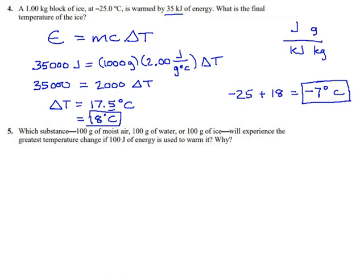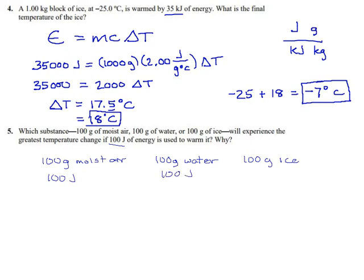What's going on with this next one? They give us three materials: 100 grams of moist air, 100 grams of water, and 100 grams of ice, and we're putting 100 joules into every one of them. It's like we're putting each on a hot plate and cooking them all for the same amount of time to see which one heats up the most. The same formula works for all of these — energy equals MC delta T — and I'm going to write that three times because we have three different samples.